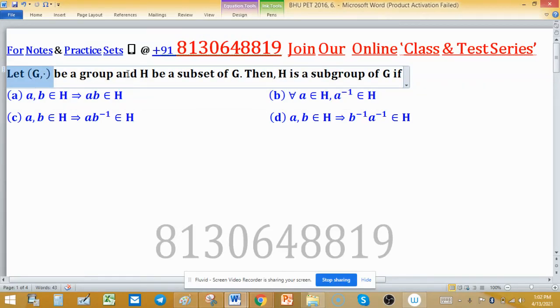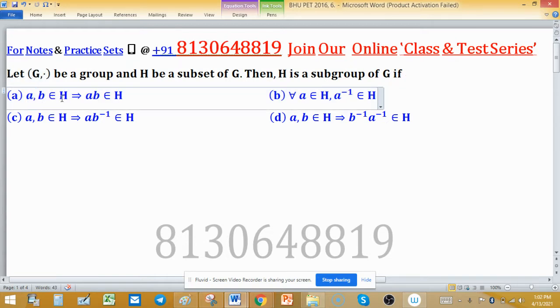Let G dot be a group and H be a subset of G. Then H is a subgroup of G if AB are two elements of H implies AB belongs to H.